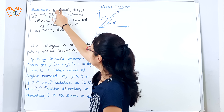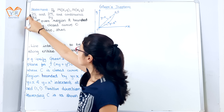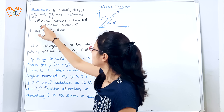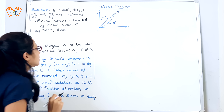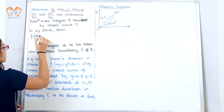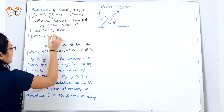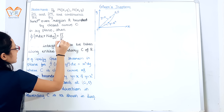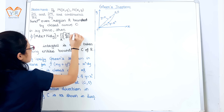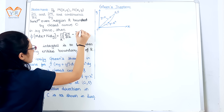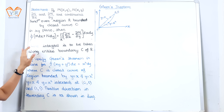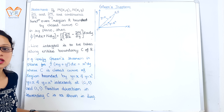The statement states: if M(x,y), N(x,y), ∂N/∂x, and ∂M/∂y are continuous functions over region R bounded by the closed curve C in the xy-plane, then the line integral over the closed curve C of M dx + N dy is equal to the surface integral over region R of (∂N/∂x − ∂M/∂y) dx dy. This is the formula for Green's theorem. The line integral is to be taken along the boundary C of region R.